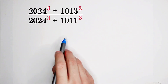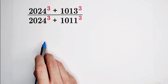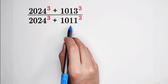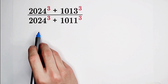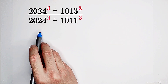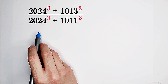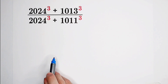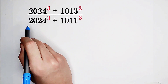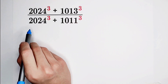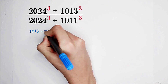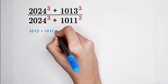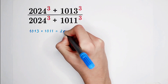Calculate this. How should we deal with this easy question? Inspection first. The numbers are 1,013, 1,011, and 2,024. Are there any relationships among these three numbers? Of course. We can notice that the sum of these two numbers is just 2,024. So that means 1,013 plus 1,011 equals 2,024.